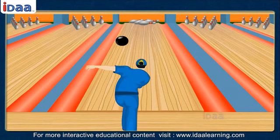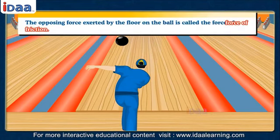In other words, we can say that the rolling ball must have experienced a force that opposed its motion. We call this opposing force exerted by the floor on the ball as the force of friction. Hence, it is quite clear that the force of friction acts opposite to the direction of motion.